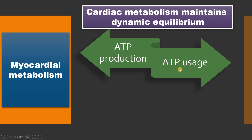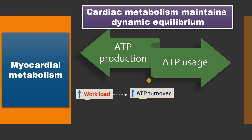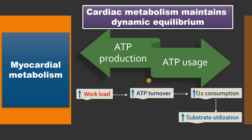There is always an equilibrium between usage and production of ATP, whether in the presence or absence of oxygen. Whenever there is increased workload as during exercise, there is definitely increased ATP turnover and increased oxygen consumption, thereby increased utilization of substrates. These substrates could be fatty acids, ketone bodies, or carbohydrates, but in normal adults the majority of substrate use is oxidation of fatty acids through beta-oxidation.